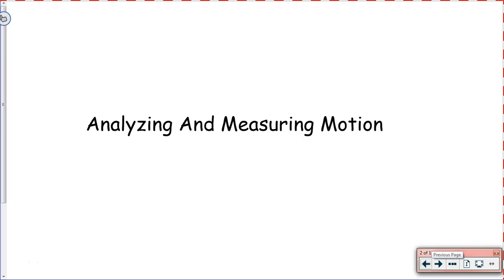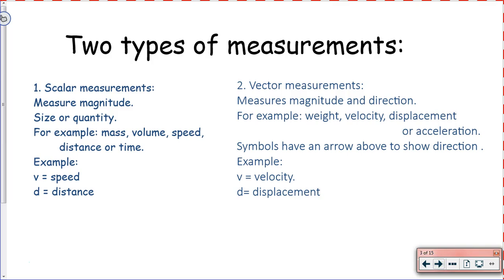So there's two types of measurements we talk about. Scalar measurements, which just strictly measure magnitude. It's a size or quantity, it has nothing to do with direction. Examples of this would be mass, volume, speed, distance, time, whatever the case may be.